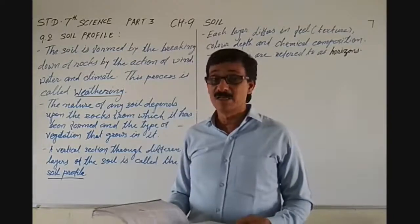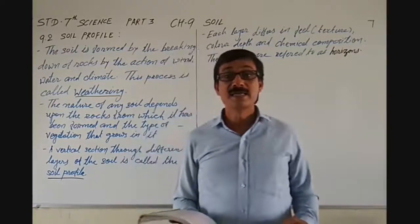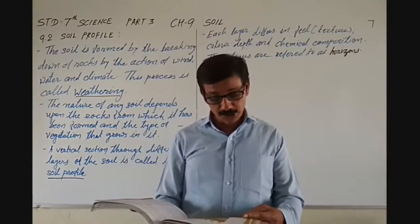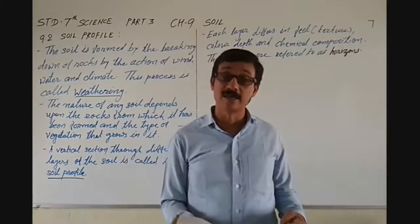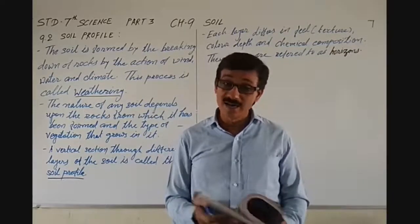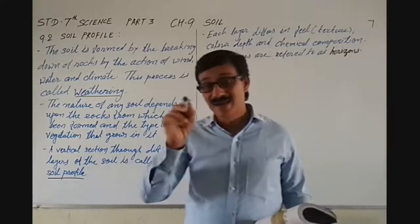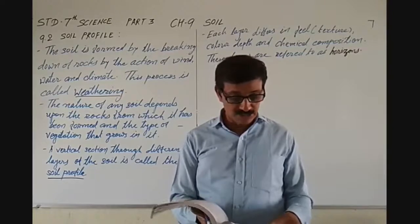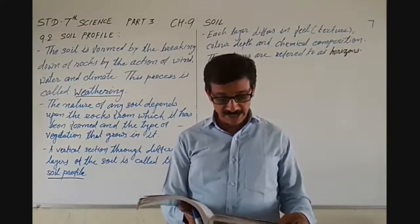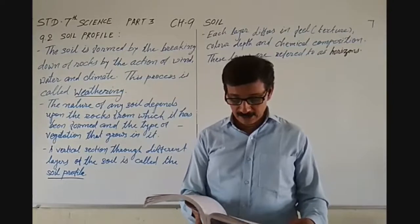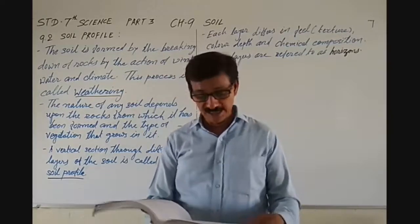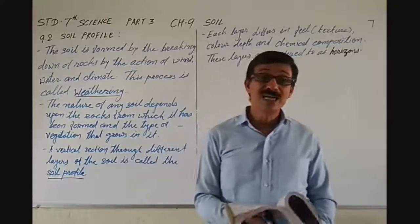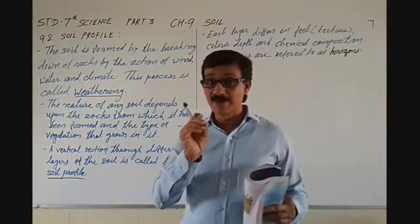If you are asked to explain A-horizon, you should start from: 'The uppermost horizon is generally dark in color,' and answer up to: 'The roots of small plants are embedded entirely in the top soil.' You may also underline these points in your textbook.